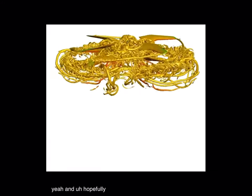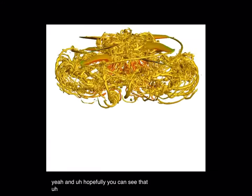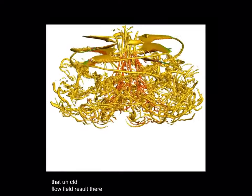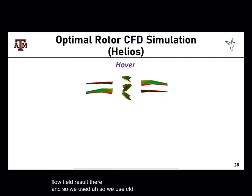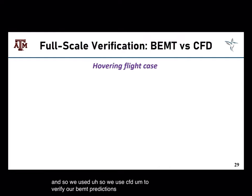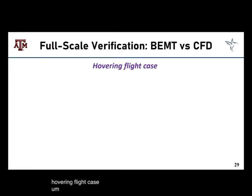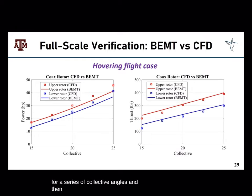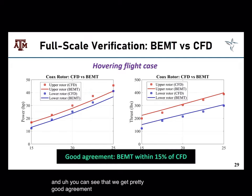We used CFD to verify our BMT predictions for the hovering flight case. Here you can see a plot of power for a series of collective angles, and thrust for a series of collective angles as well. We get pretty good agreement between the two — within about 15% of each other — so we were pretty happy with that result.